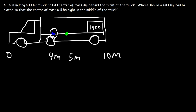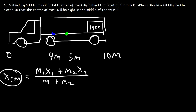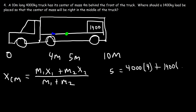The blue dot represents the center of mass of the truck alone; the green dot is the center of mass of the truck and load combined. The equation is: the combined center of mass equals the mass of the truck times its center of mass position, plus the mass of the load times its position, divided by the total mass. The combined CM is 5, truck mass is 4000 kg at position 4, load mass is 1400 kg at unknown position x2.